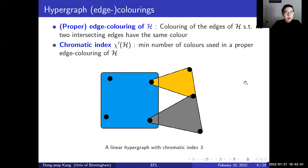Now I will introduce some terminology on hypergraph edge colorings. A proper edge coloring of a hypergraph is a coloring of the edges such that no two intersecting edges have the same color. The chromatic index, denoted by χ', is the minimum number of colors used in a proper edge coloring of a hypergraph.